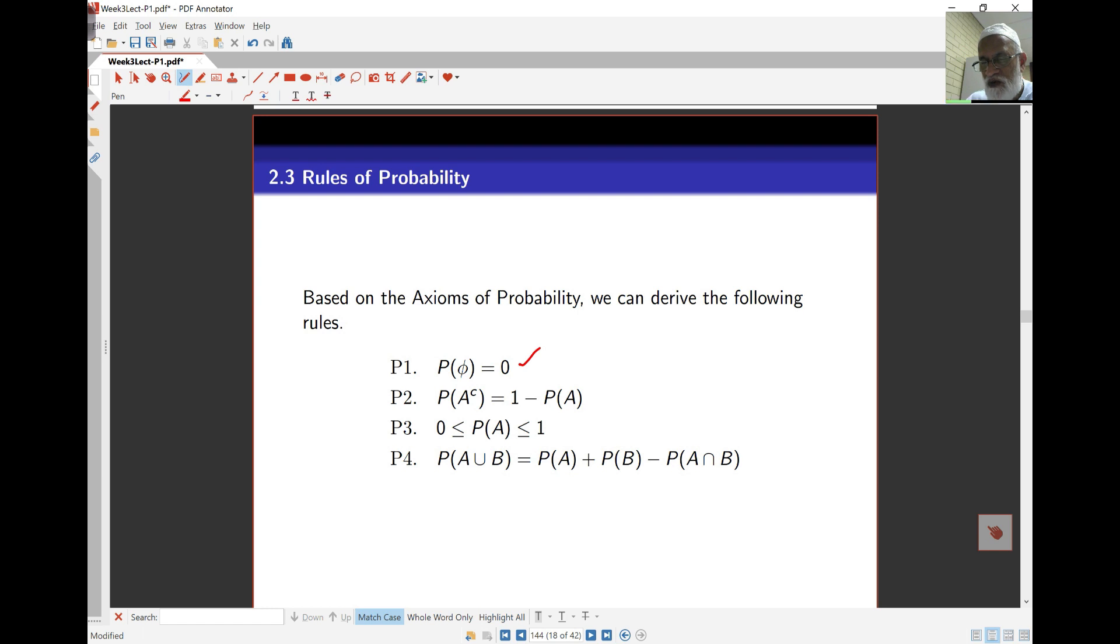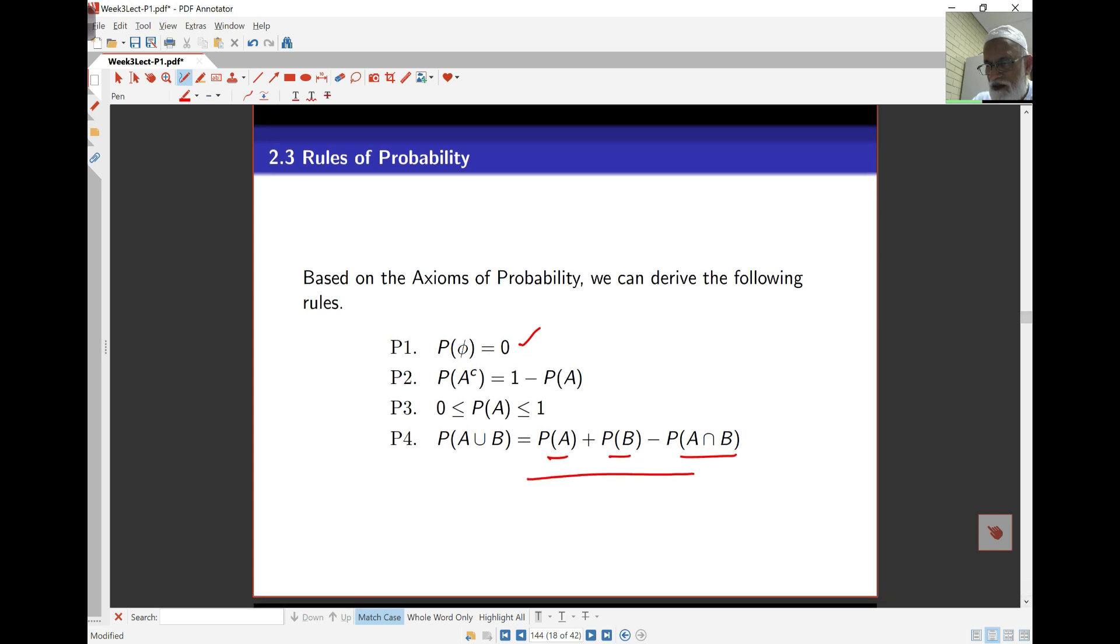Probabilities for A union B, where A and B are not necessarily disjoint, is probability of A plus probability of B minus probability of A intersection B. You can see this—you must have seen this in high school earlier. The idea is if I'm looking at probability of A union B when A and B are not disjoint, in the first sum probability of A and probability of B, I'm adding my middle bit here twice. The intersection is added twice, so I subtract it once to make sure I'm not double counting. That's how this works. We can use these rules for problem solving.